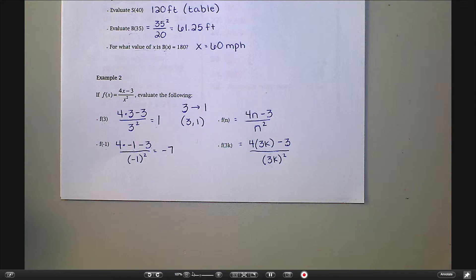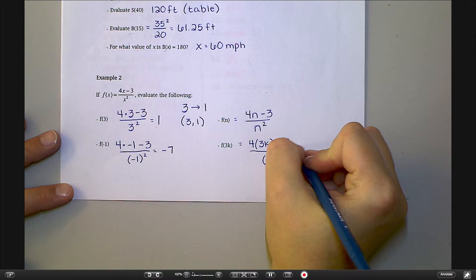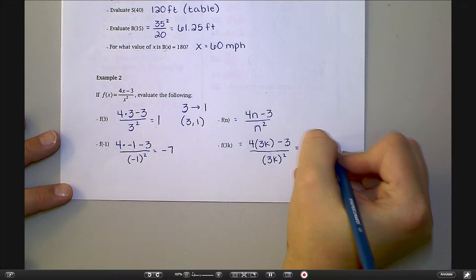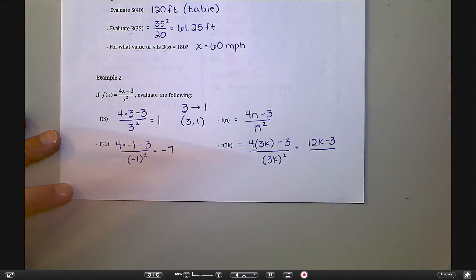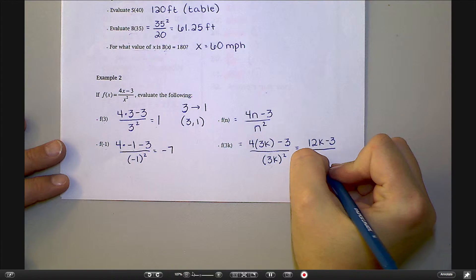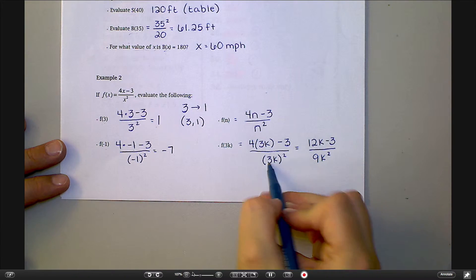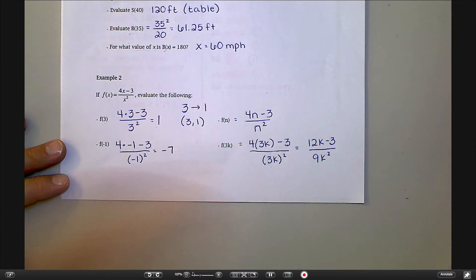Now this one I can simplify. How could I simplify that top? Logan, go ahead. So that would become 12k minus 3. What would the bottom turn into? 9k squared. The k still gets squared. This means square the 3 and square the k.